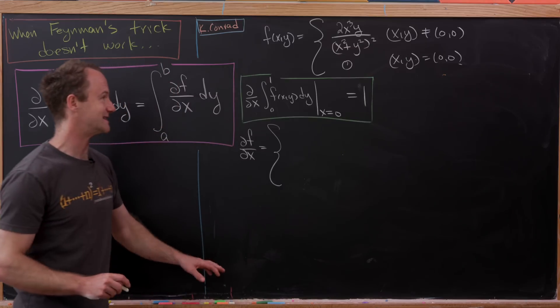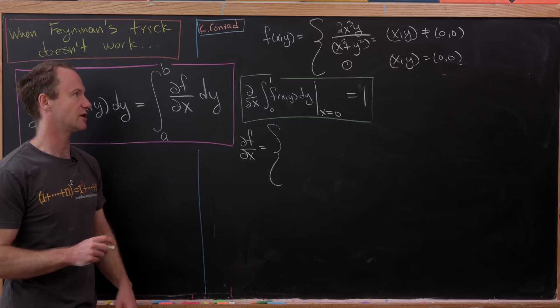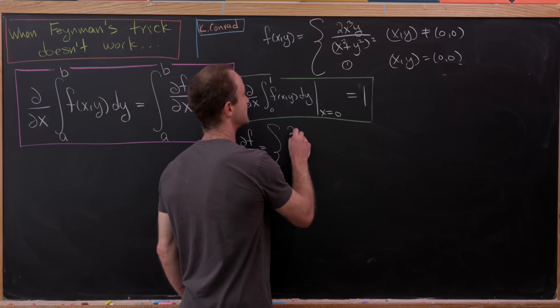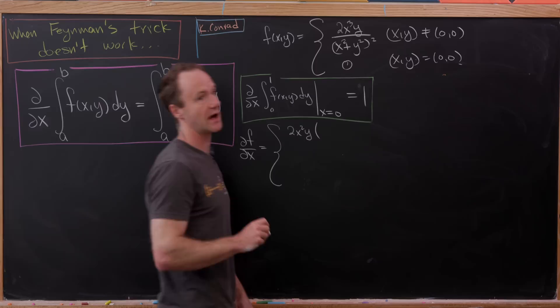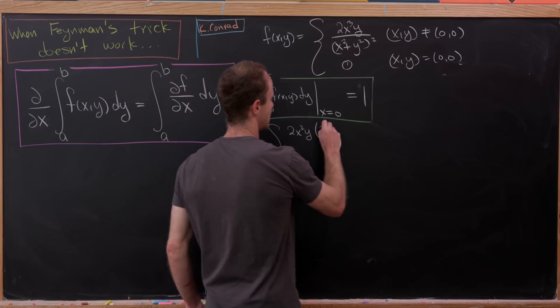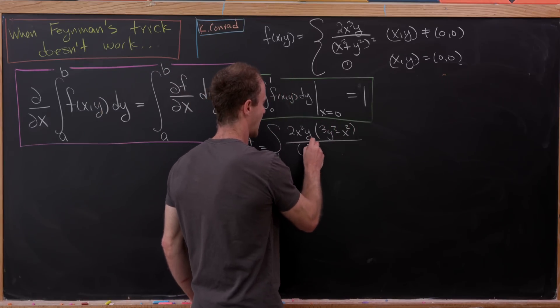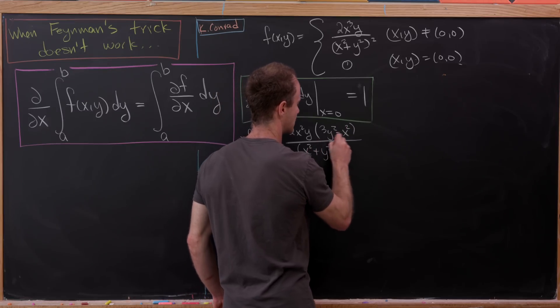I won't go through all the details because that's just practice in using all of your derivative rules. But you'll end up with something like this. We'll have 2 times x squared times y times 3y squared minus x squared over x squared plus y squared all cubed.